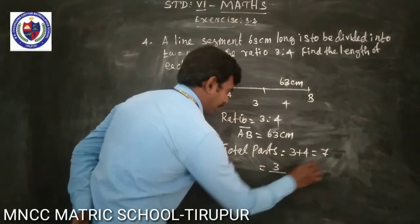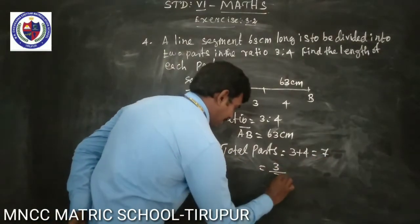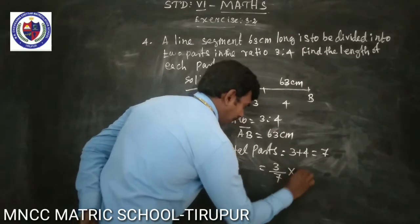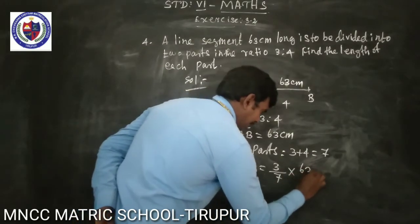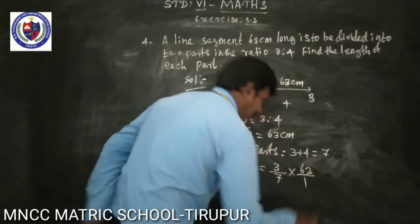The first part equals 3 divided by 7, multiplied by 63.